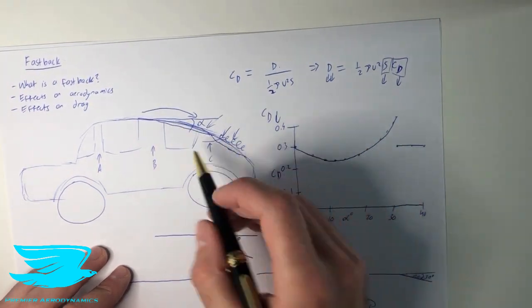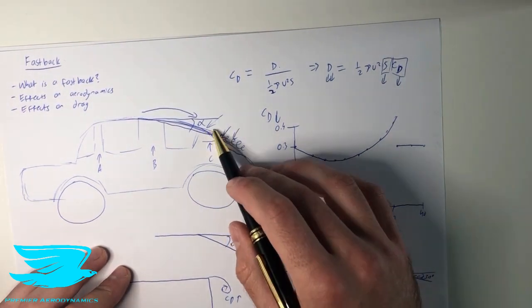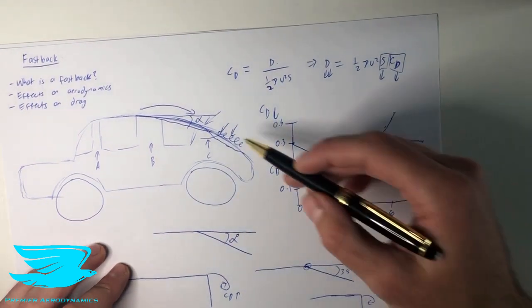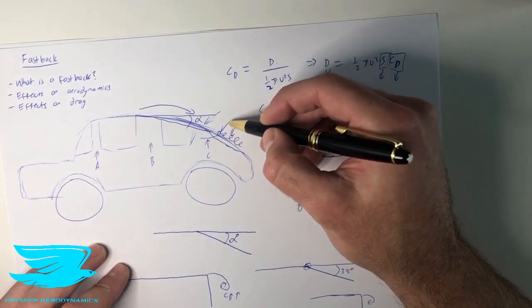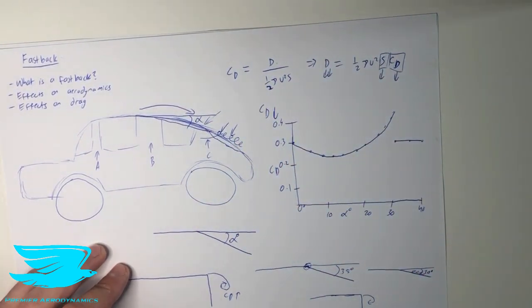But with fastbacks, you now have a very gentle slope coming down. And this reduces the drag coefficient by creating these vortices, which help the flow suck down to the back of the car, keep it attached, which means that there's not much separation, which means there's not a big wake. And this reduces the drag coefficient of the car.